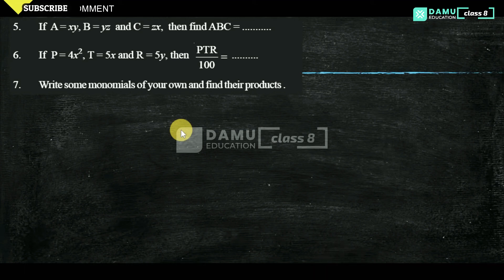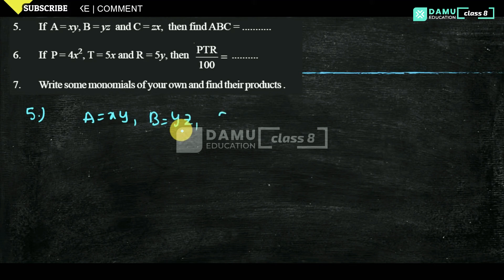Question 5 is: If A equals xy, B equals yz, and C equals zx, then find ABC.